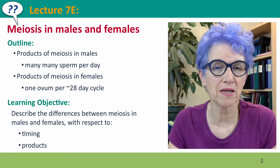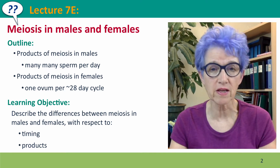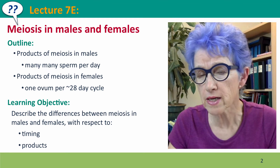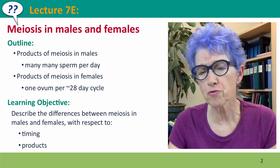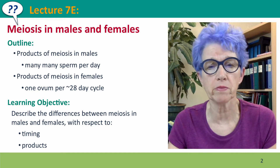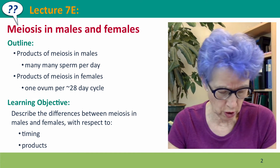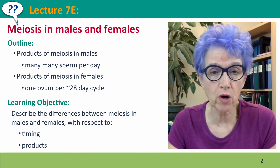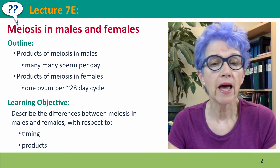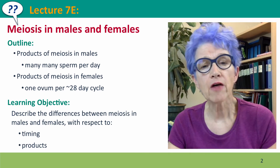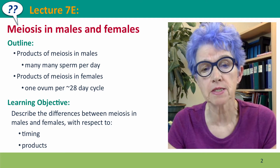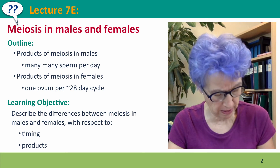Hi everyone, welcome back to lecture 7E of Visual Genetics. We're going to talk briefly about the differences in meiosis between males and females — the products of meiosis in males and in females, and the timing of when meiosis happens in each.